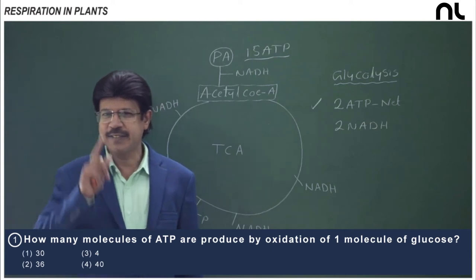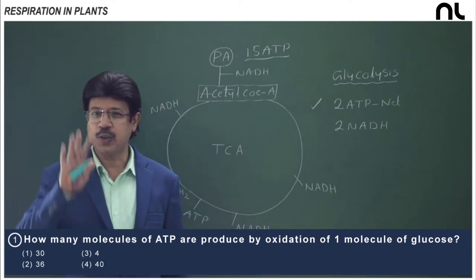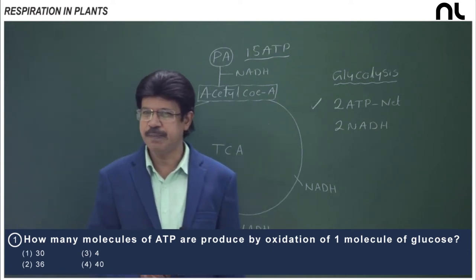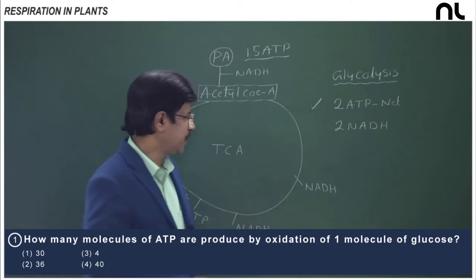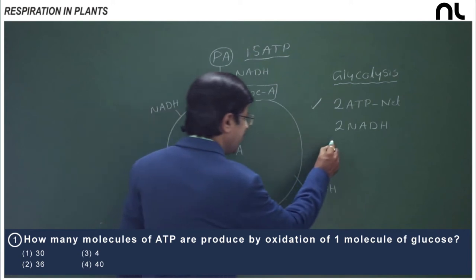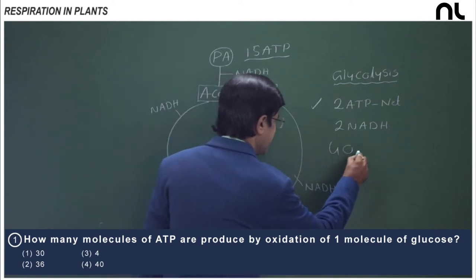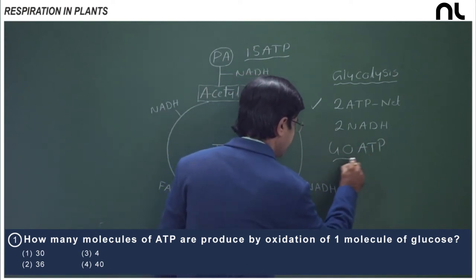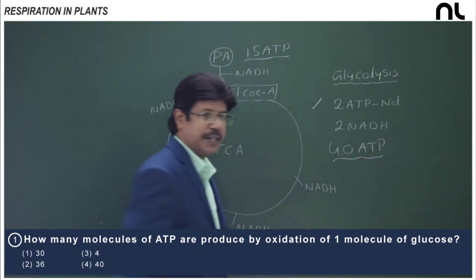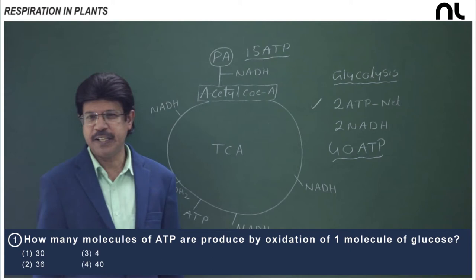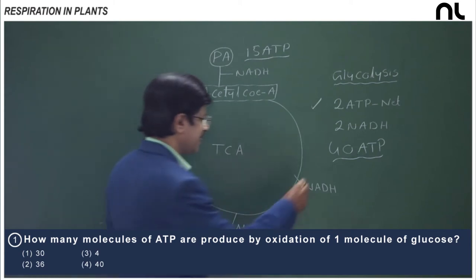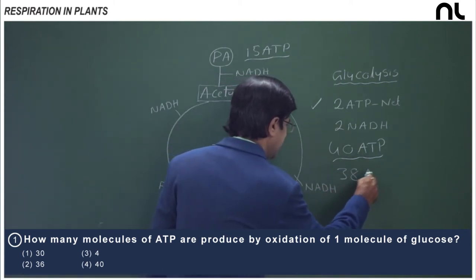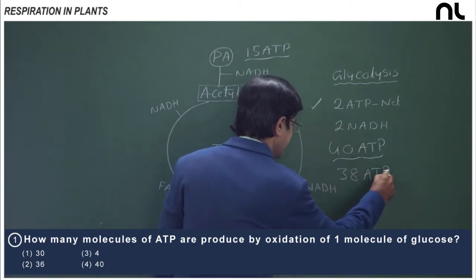In glycolysis, the total ATP formed is 4 ATP, making the grand total 40 ATP. However, since 2 ATP are consumed in glycolysis, the net gain of ATP from complete oxidation of one glucose molecule is 38 ATP.